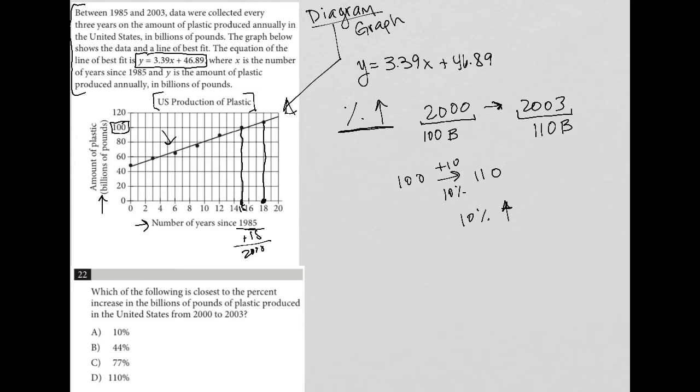But the traditional way to do this, in case you ever see percent increase on any other question that may not be so simple, is you just divide the final number, 110, by the original number, 100. Math's not difficult here, but just to show you.